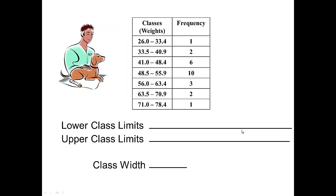As before, we can also list the lower class limits, which would be the numbers on the left, which are the lower numbers of each class. That would be the 26, the 33.5, and then the 41.0, next the 48.5, then the 56.0, next the 63.5, and finally 71.0.